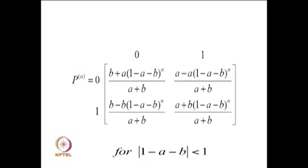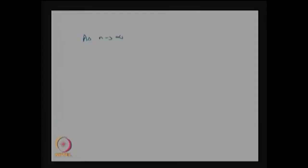Note that p(n) is the same as p^n. As n tends to infinity, the probability that the system is in state 0 converges to b/(a+b), and the probability that the system is in state 1 converges to a/(a+b).